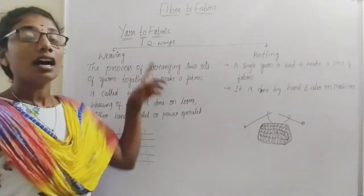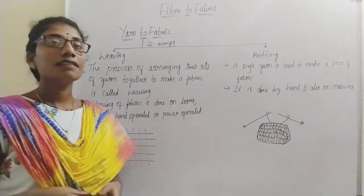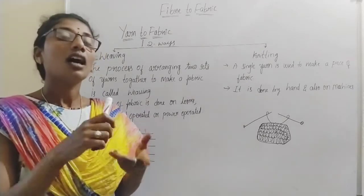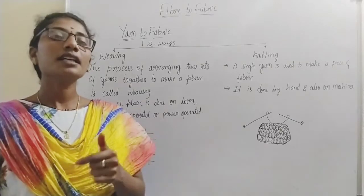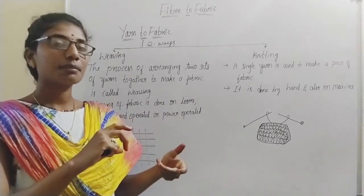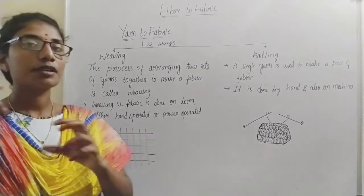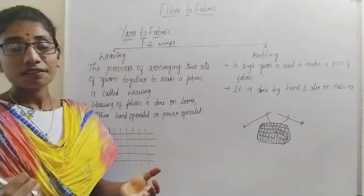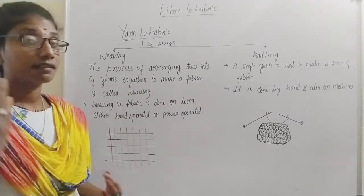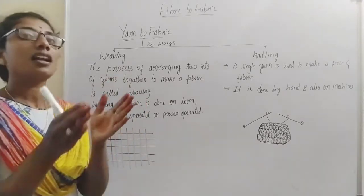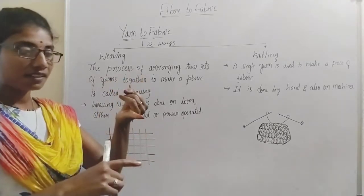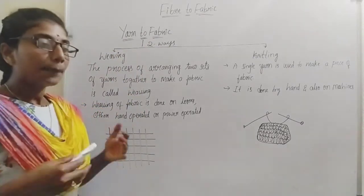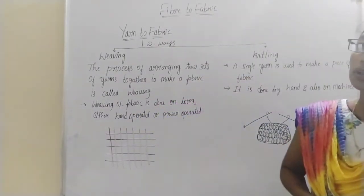Okay students, now let us learn how a yarn is converted into fabric. Till now we have understood how fibers are obtained from plants, and how the fiber obtained from the plant is converted into yarn by spinning. We learned that cotton fibers are converted into yarn by spinning. Now let us learn how this yarn is used to prepare a fabric. From fibers, yarn will be produced; from yarn, fabric will be produced.